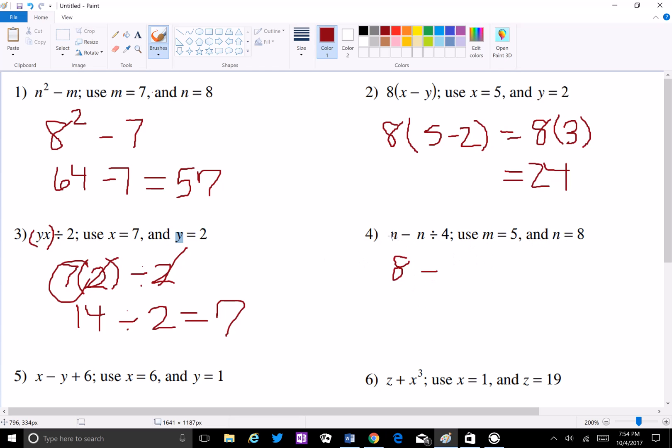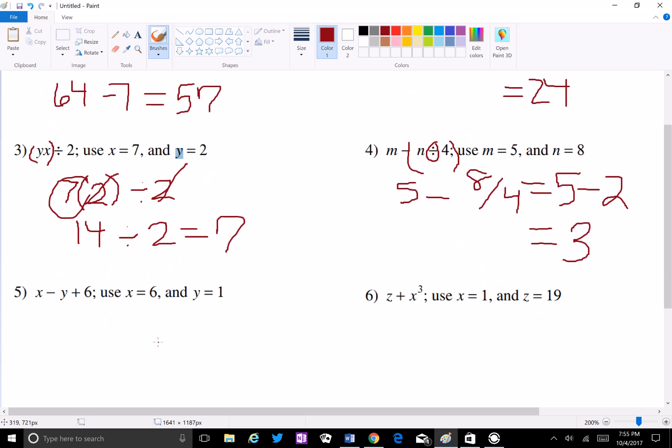So it would be... wait that's an m, oh shoot, hold on. Okay so that's an m, so you would do my apologies... eight divided by four, and you would do this first because there's a division sign. So you'd wind up with 5 - 2 which would equal 3.